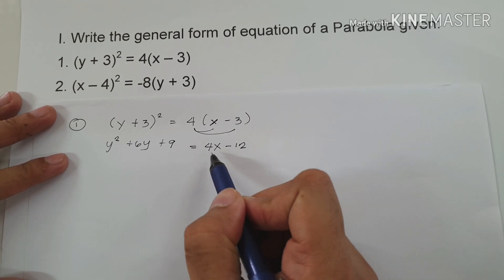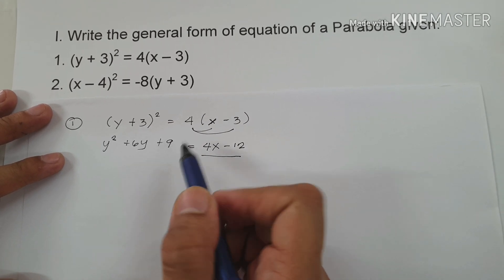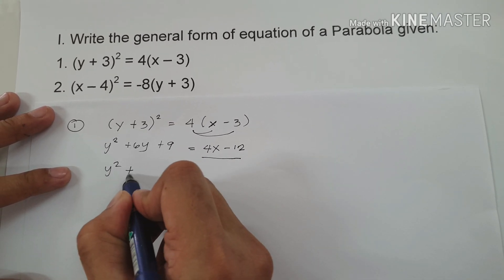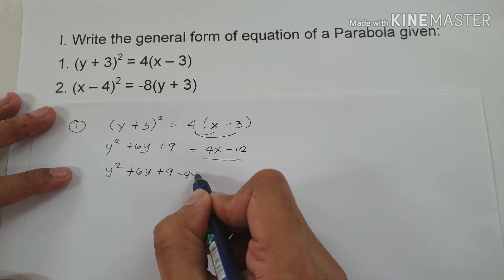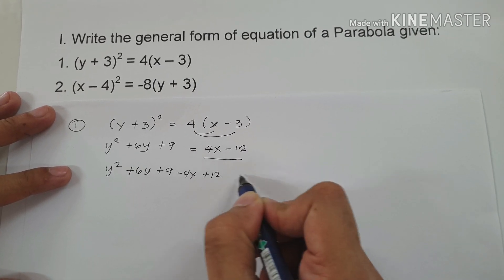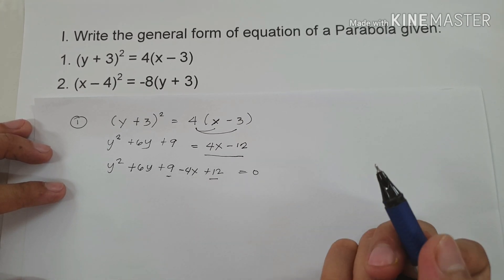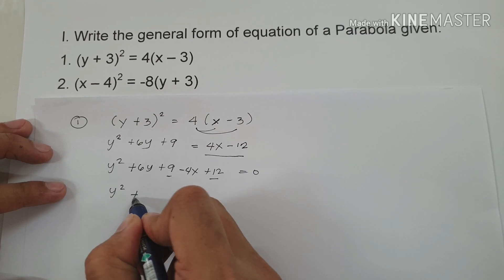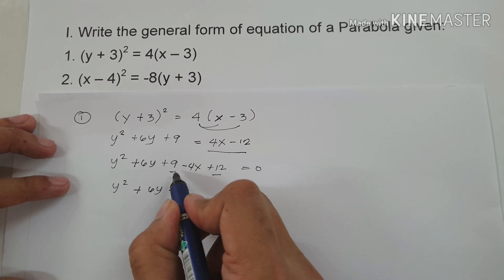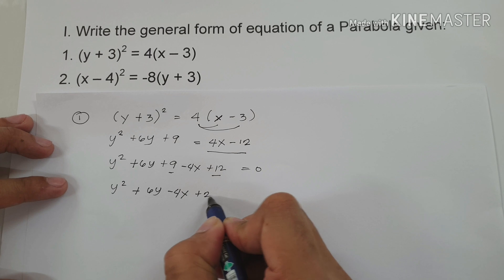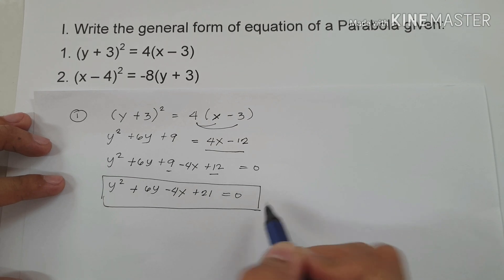To make this equation a general form, we're going to move 4x - 12 to the side of y² + 6y + 9. So we write y² + 6y + 9; from positive it became -4x, from -12 it became +12, equals 0. Combining like terms — 9 and 12 — gives us y² + 6y - 4x + 21 = 0. This is the general form of the equation of a parabola.